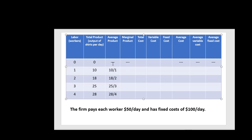The marginal product is just the change in total product when we use one more worker. When we go from 0 to 1 worker, total product increases from 0 to 10, a 10 unit increase. When we go from 1 to 2 workers, total output increases by 8, from 10 to 18. When we go from 2 to 3 workers, total output increases by 7 units, the difference between 25 and 18. And then the marginal product of the fourth worker is going to be 3, the difference between 28 and 25.